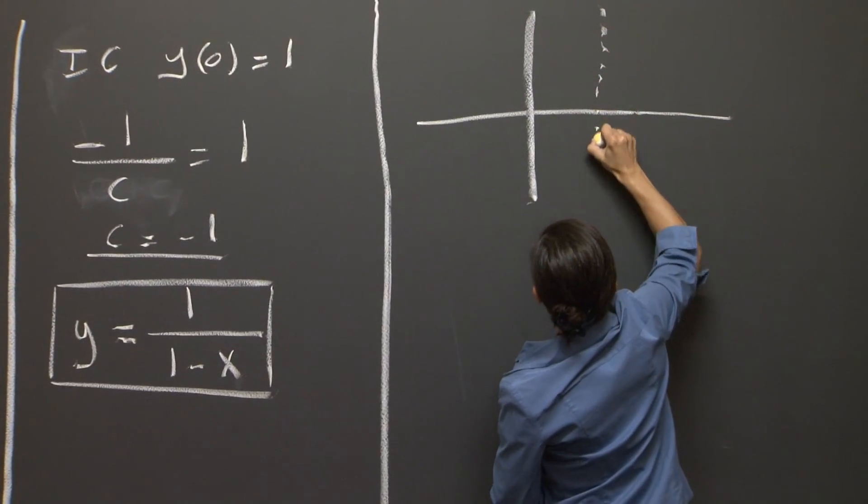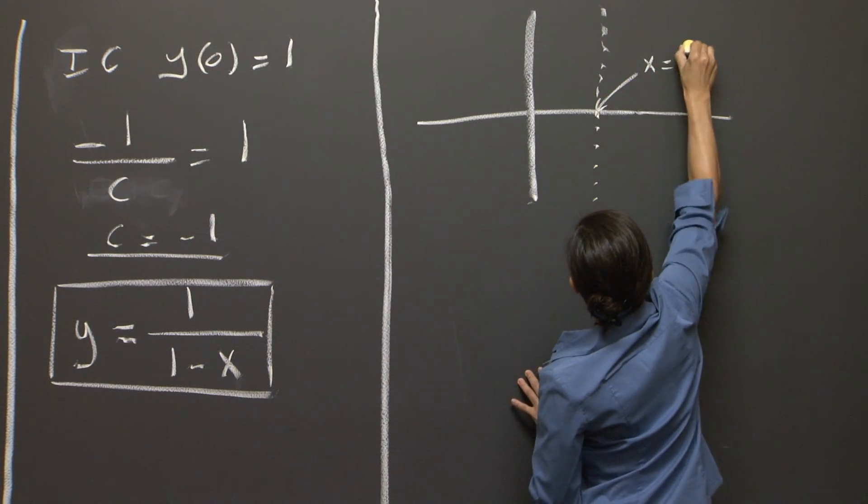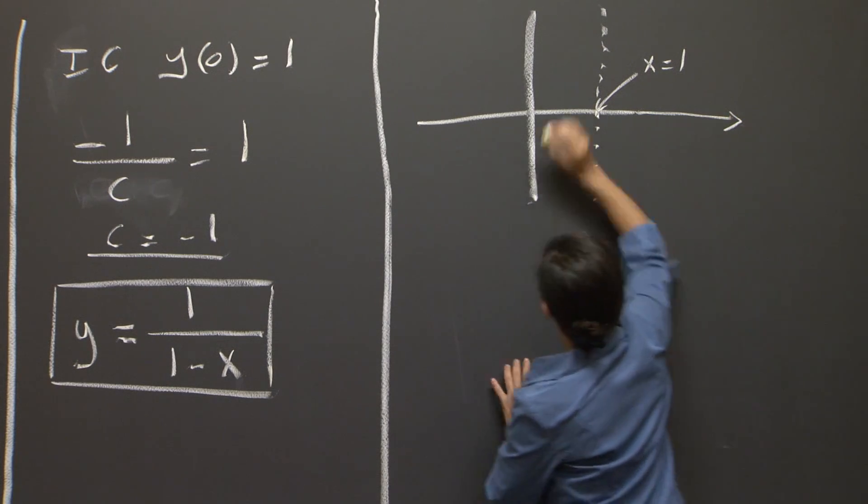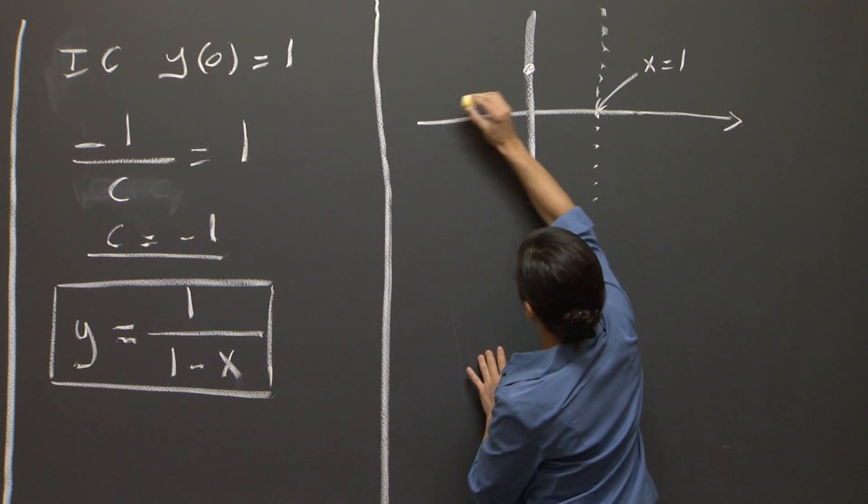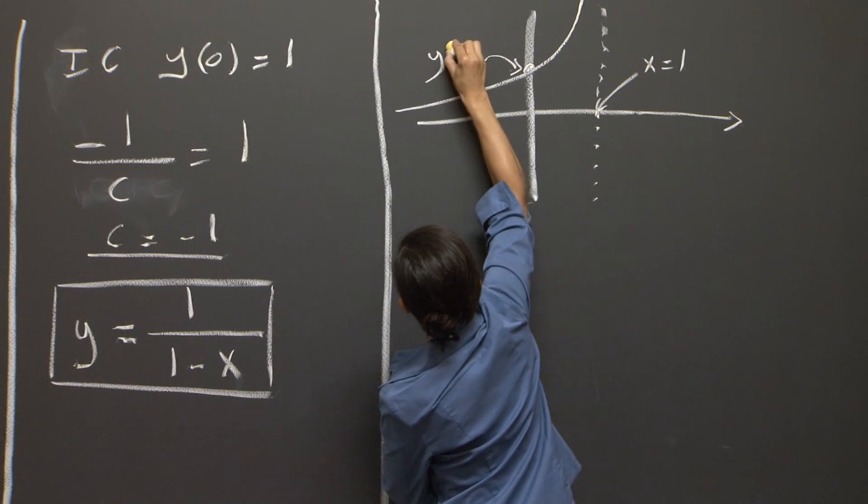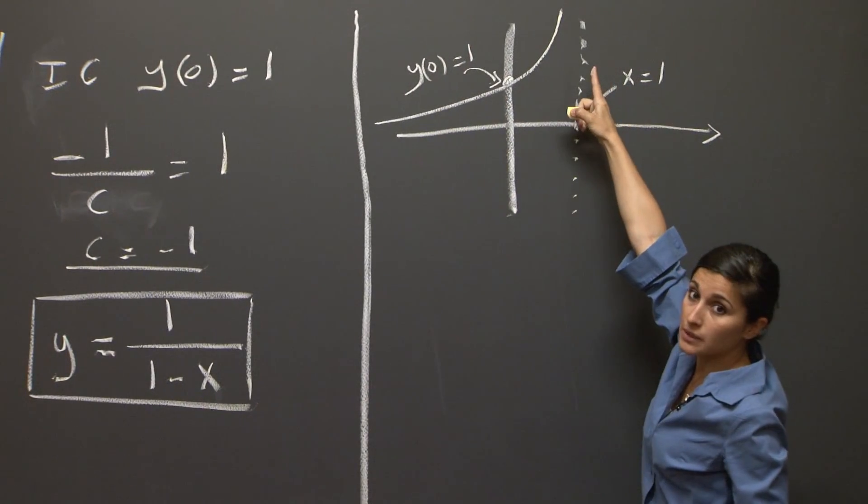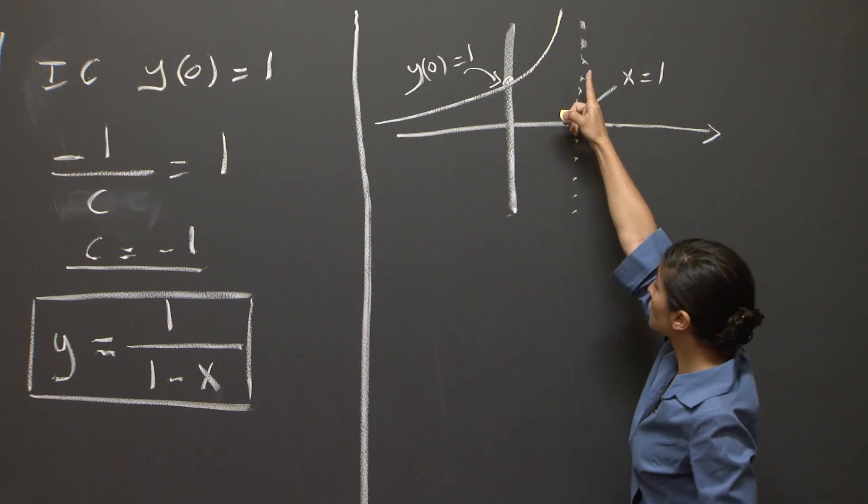We're going to have an asymptote on x equals 1, and a solution that passes through our initial condition, y equals 1, going to infinity when approaching x equals 1.